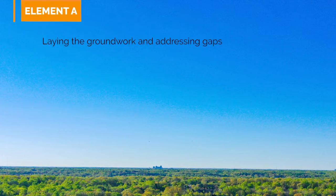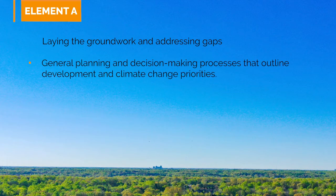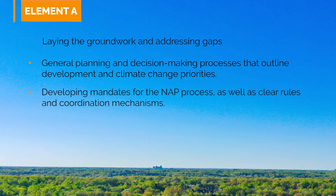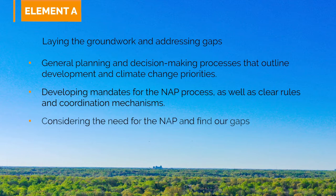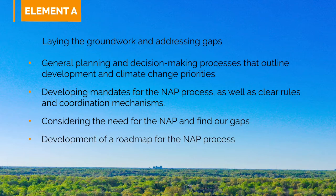Element A: Laying the groundwork and addressing gaps. This is the first step to start the NAP process and it involves general planning and decision-making processes that align development and climate change priorities. Governments may be required to develop a mandate for the NAP process as well as clear rules and coordination mechanisms for ministries and key stakeholders. It is critical to consider the need to initiate the national adaptation planning cycle, investigate what adaptation activities are already underway, and identify gaps in capacity, information, and resources. Outputs could include the formation of coordinating committees, a synthesis of available data and knowledge, and a strategy or roadmap for the NAP process.